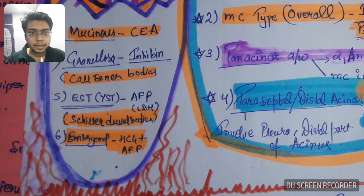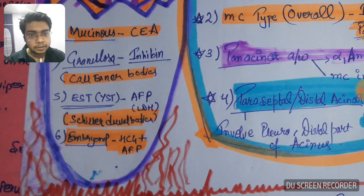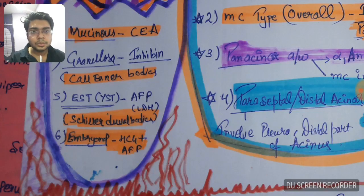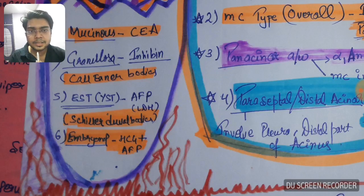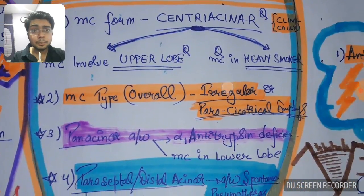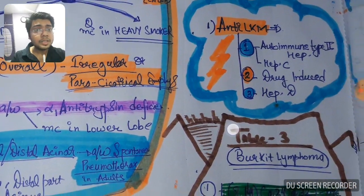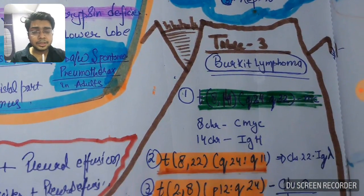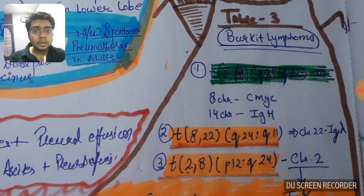These two are very important: granulosa, mucinous, and I think three or four, it will be embryonal and endodermal sac tumor. You must remember this: mucinous CEA, granulosa inhibin, endodermal sac tumor AFP, embryonal is HCG along with AFP. This completes two, three actually high yielding tables and I do not want to waste too much of your time, so I am going a little bit fast.